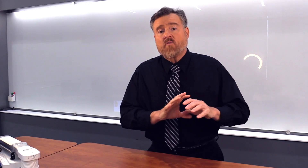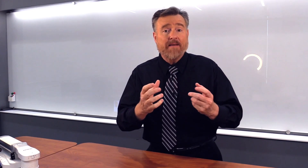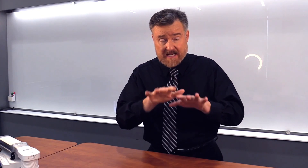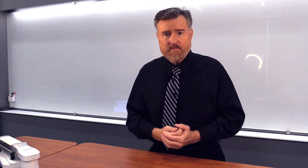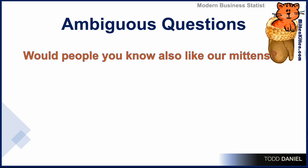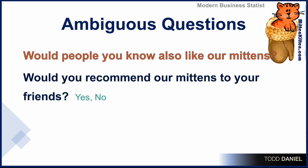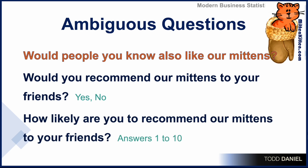This is a good reason why you would pilot test your survey. Sometimes the thing that you think you are asking is not coming through clearly — you may be asking an ambiguous question. For example, you ask the visitors at mittenkitten.com, would people you know also like our mittens? You could structure this question much better by asking, would you recommend our mittens to your friends — yes or no — or using a Likert scale of 1 to 10, asking how likely are you to recommend our mittens to your friends?